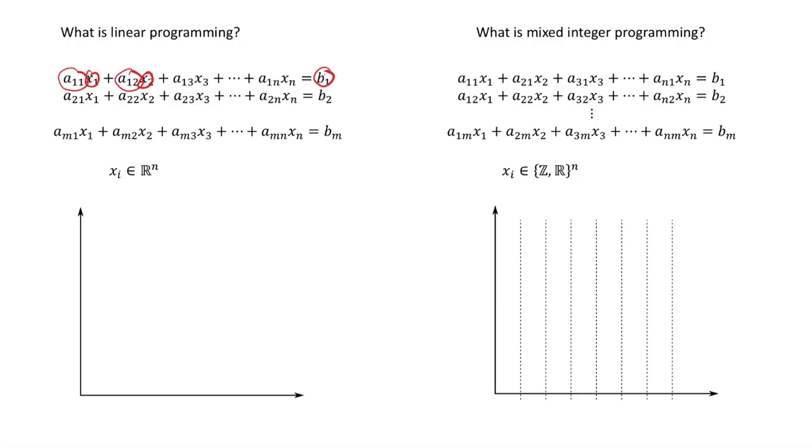That's the case for every equation: b1, b2, all the way up through bm or equation 1, 2, and m. We note that these variables are in the real space or are continuous. And we do that by saying every variable x with subscript i, so x1, i equals 1, x2, i equals 2, and so on. Each of those variables are in the space that's real of dimension n. We have n variables here.